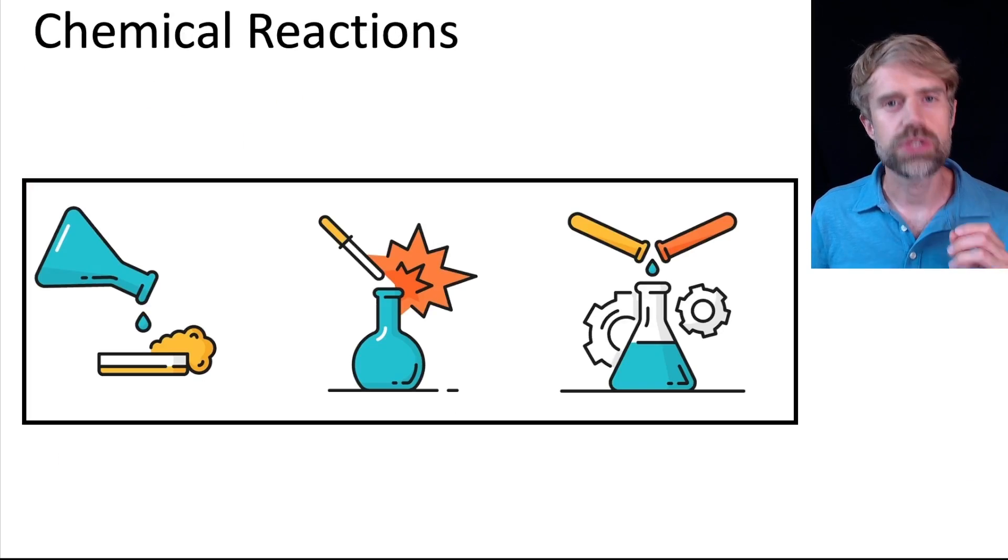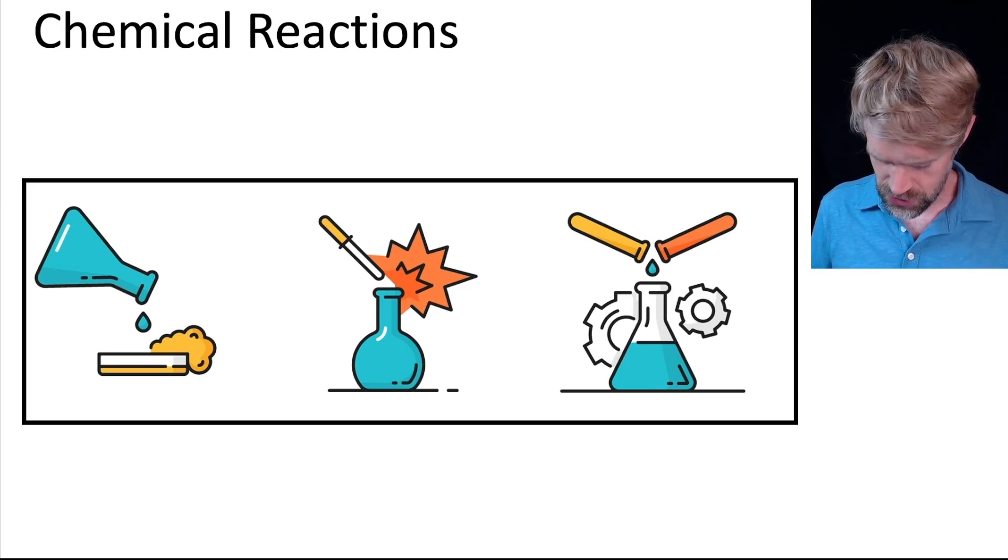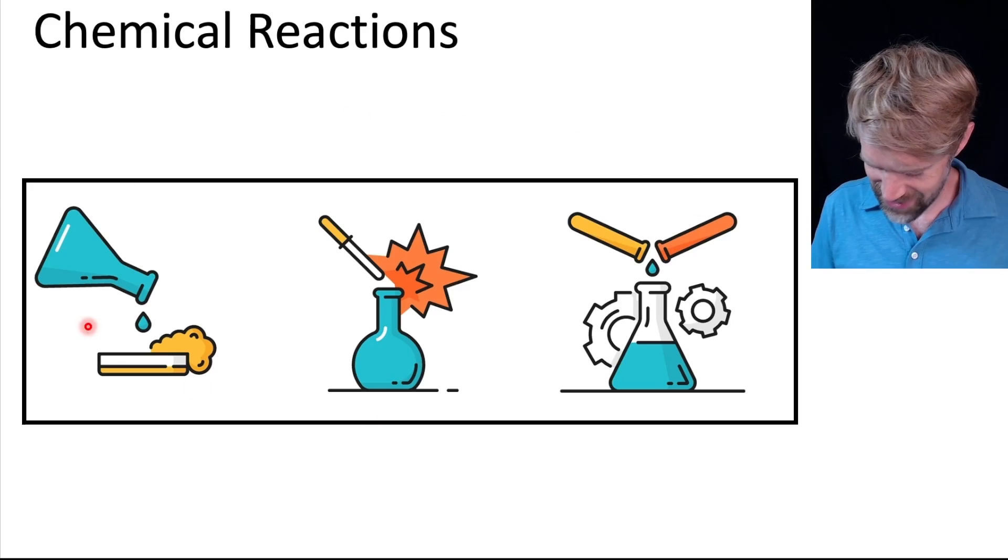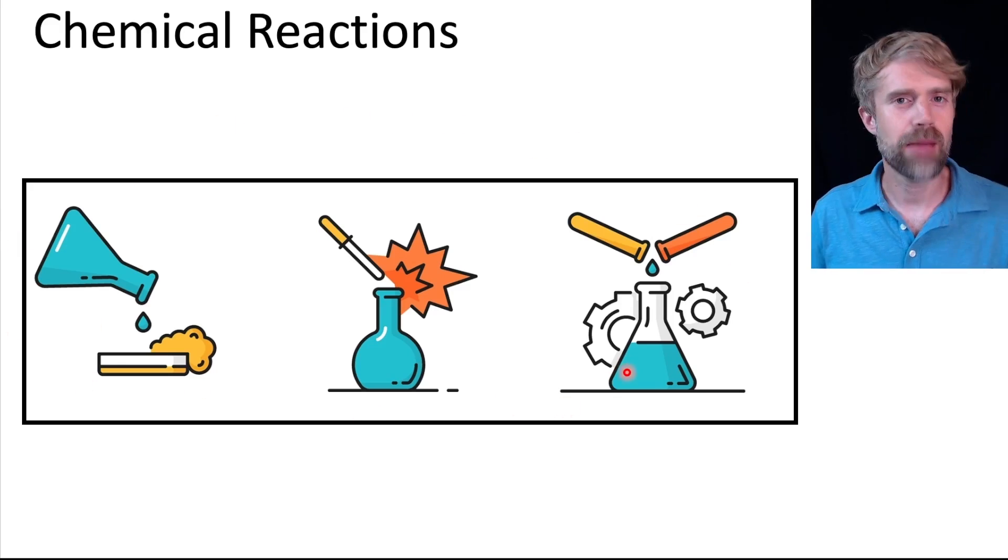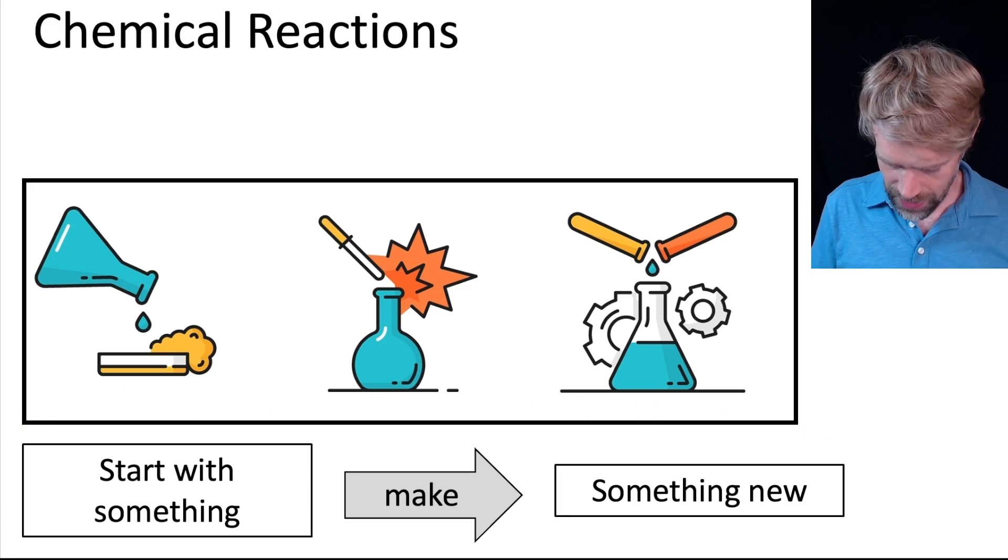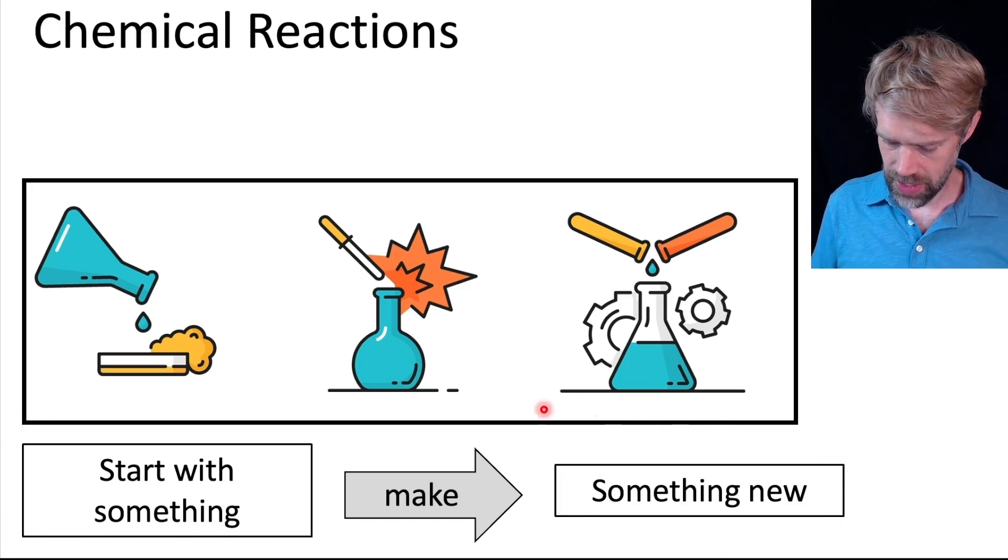Chemical reactions are one of the most important things in chemistry. When you imagine a chemist working in a lab, you probably picture chemical reactions. A chemist starts with some chemicals, they mix them together, maybe there's a color change or a little bit of fire, and bam! They end up with something new. And at a really basic level, this is what happens in a chemical reaction.